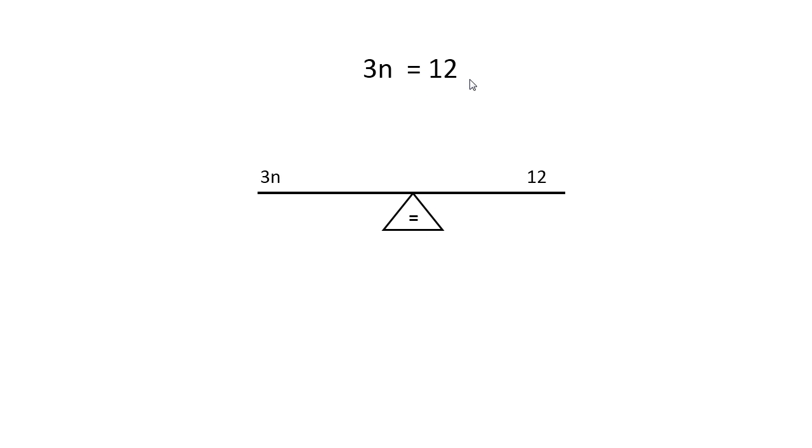If I have 3n equals 12, that means 3n is sitting on this end of the teeter-totter, and 12 is sitting on this end of the teeter-totter, and it's balanced. Anything I do to one side of the teeter-totter, I must do the same thing to the other side of the teeter-totter. So let's work through this equation.